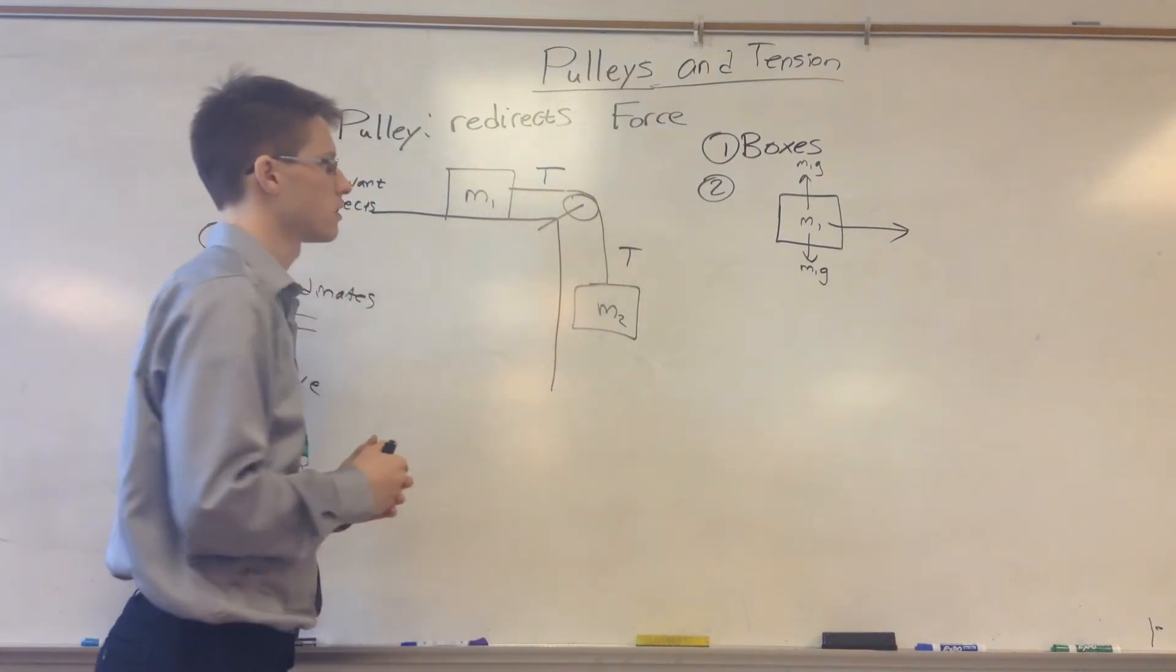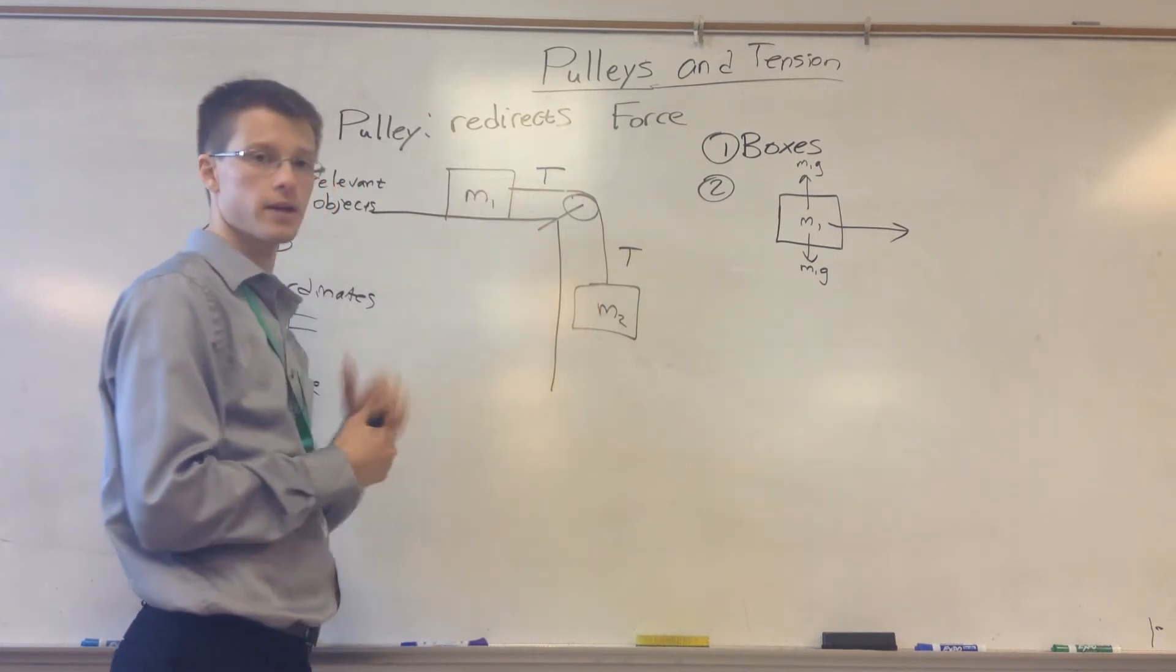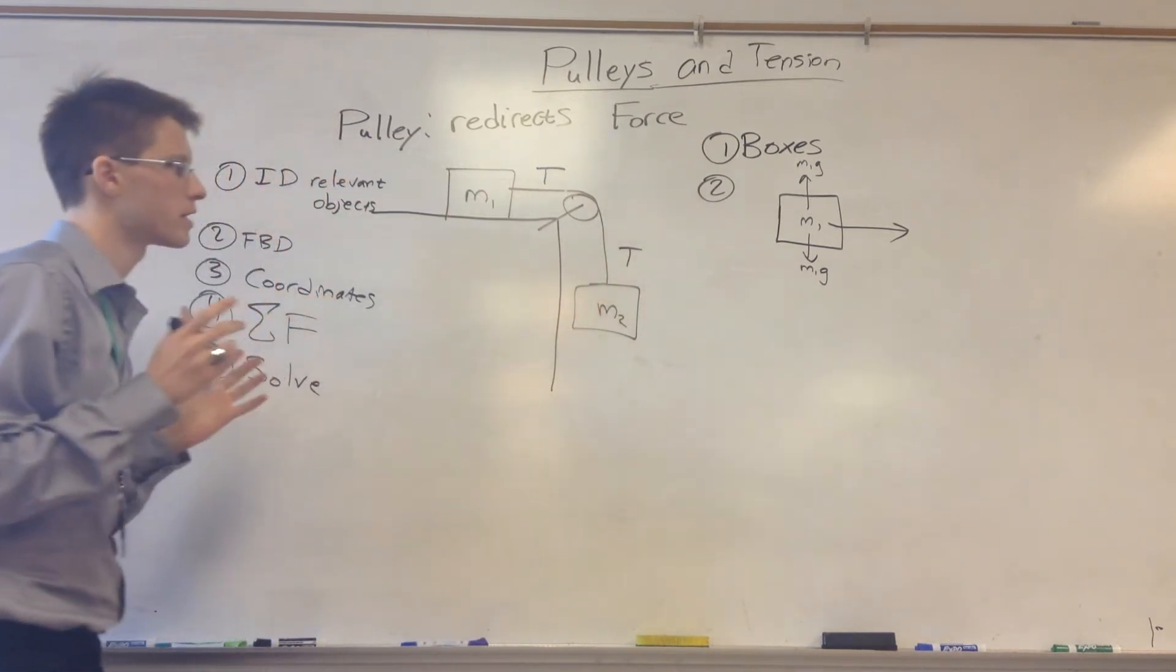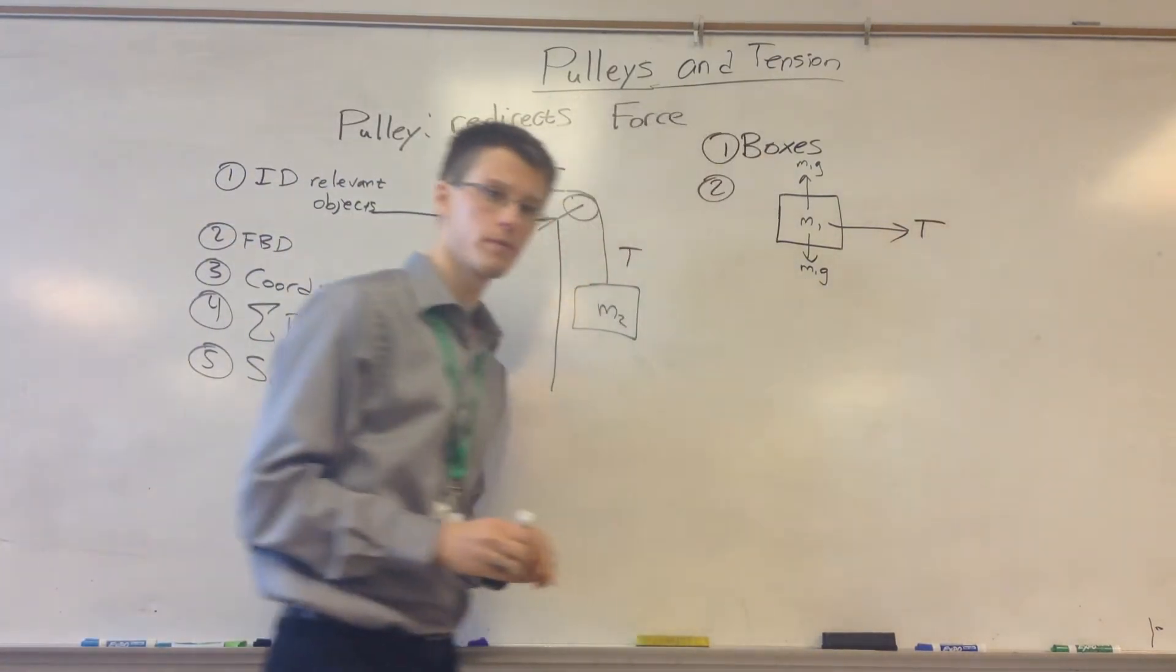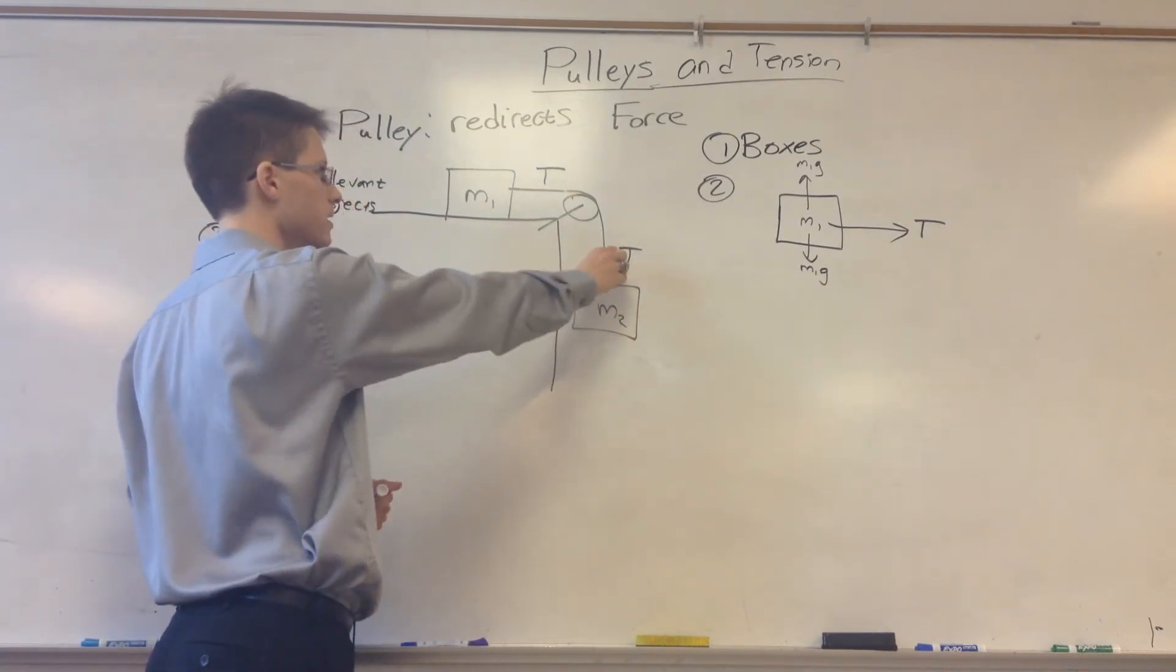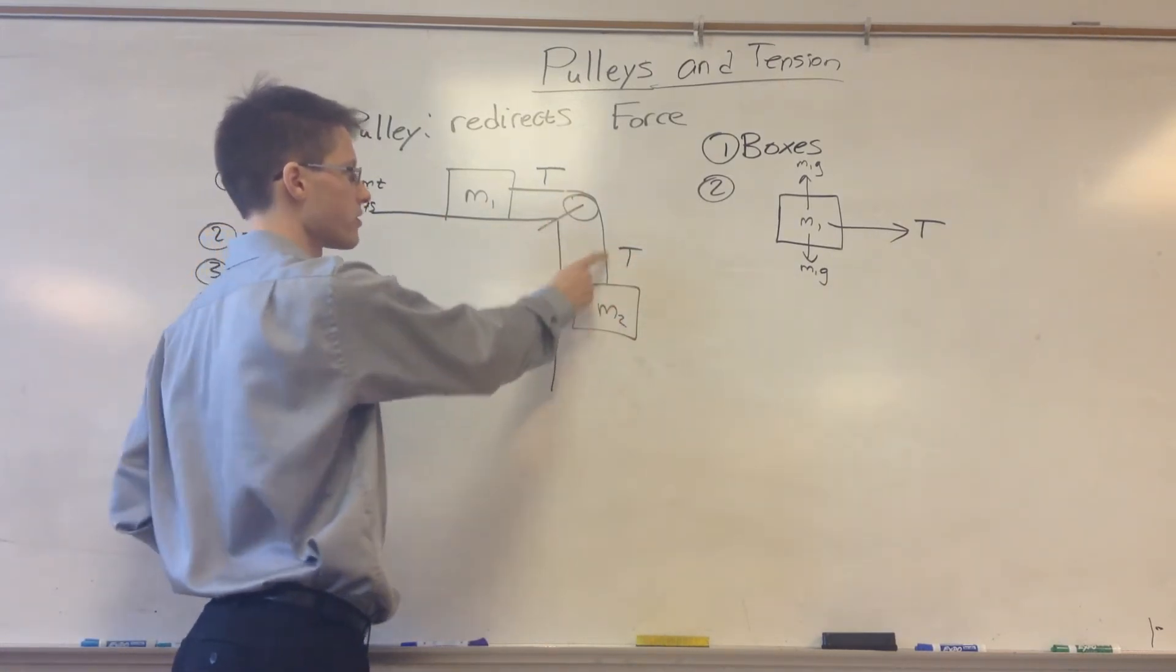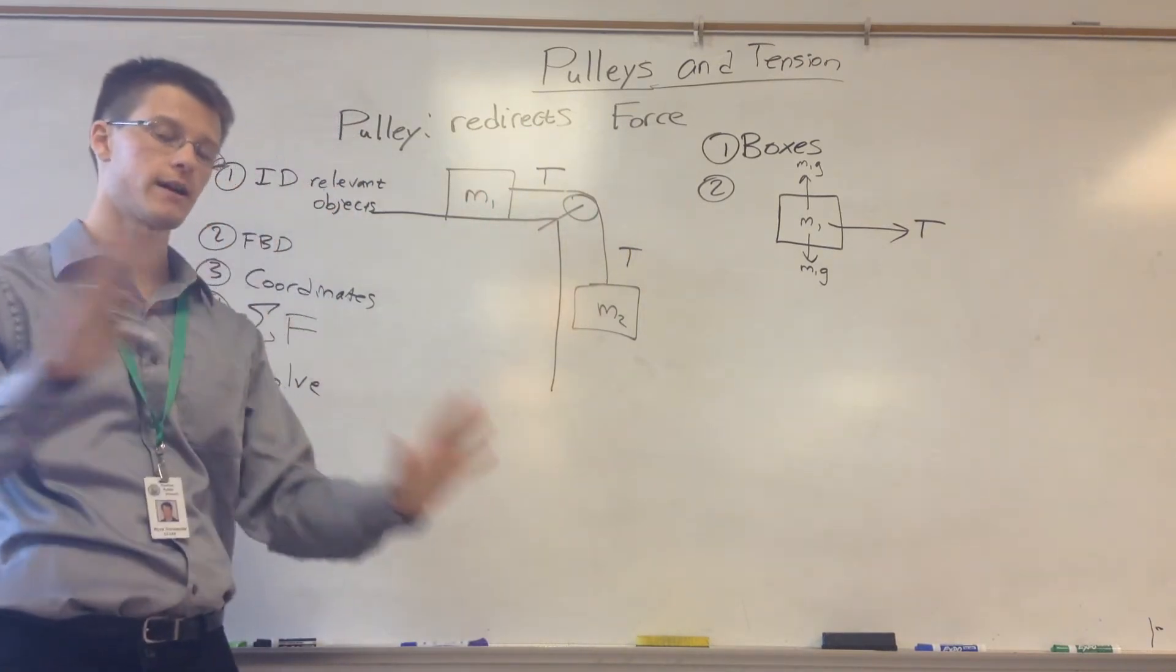Both of these blocks feel tension. That's what is holding this block up and is pulling this block to the right. The key thing here is all we have to do is write T if we see the rope. Tension accounts for the fact that this block is pulling down, so it's transmitting a force through this rope onto this block. That is tension. Tension accounts for all of them.